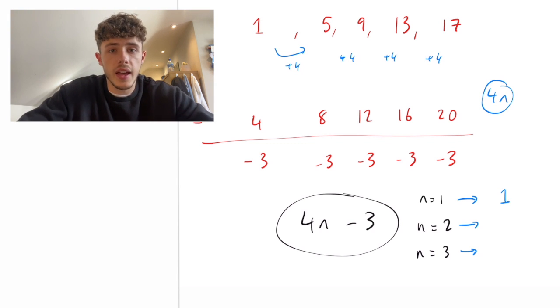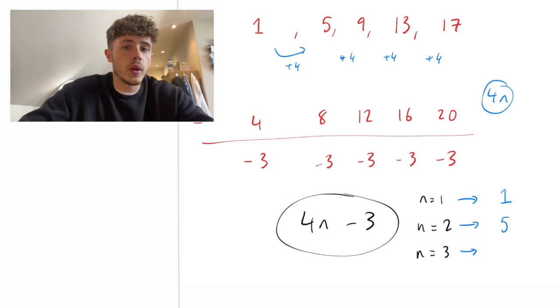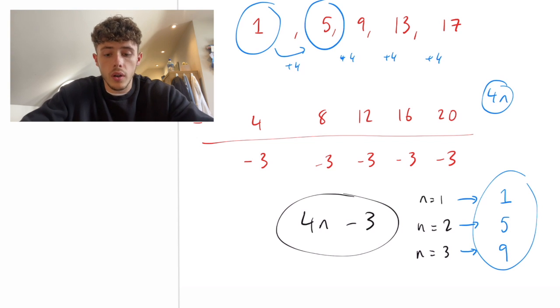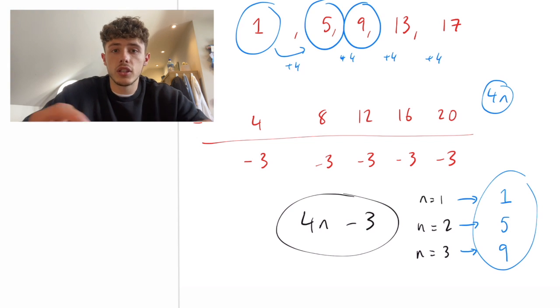If we substitute 2 in there, same process, we're going to get 5. Substitute a 3, we're going to get 9. If you look back to the original sequence, the original sequence was 1, 5 and 9. So that just goes to show that we've got the nth term correct. And again, you can do exactly the same thing for quadratic nth term.